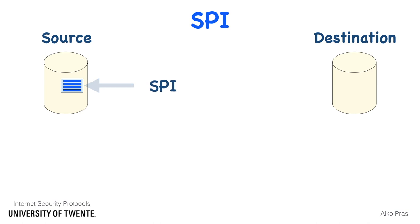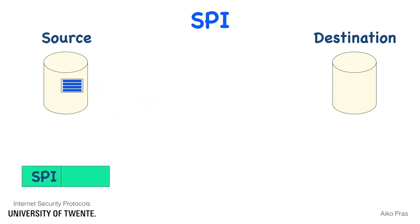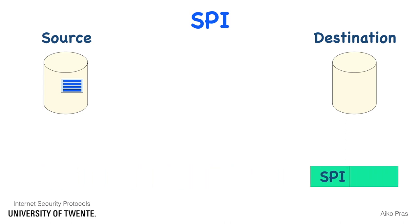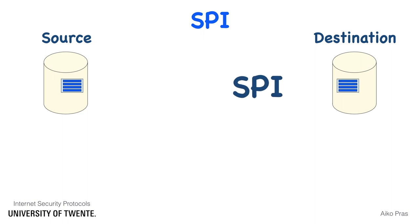The SPI is included by the source in the header part of each IPSec packet. The IPSec packet is then transferred from source to destination. Upon reception of an IPSec packet, the receiver uses this SPI to identify this specific security association and retrieve the related parameters.